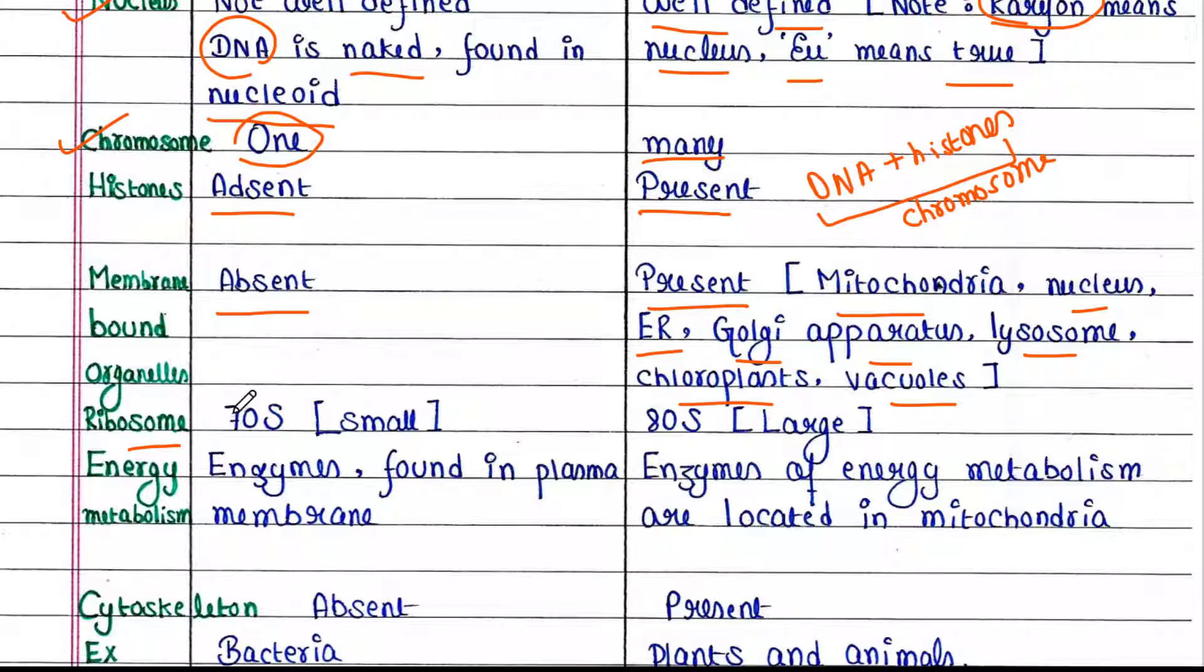Ribosomes are 70S in prokaryotes and 80S in eukaryotes. From the value, you can understand that 70S is small and 80S is large in size.